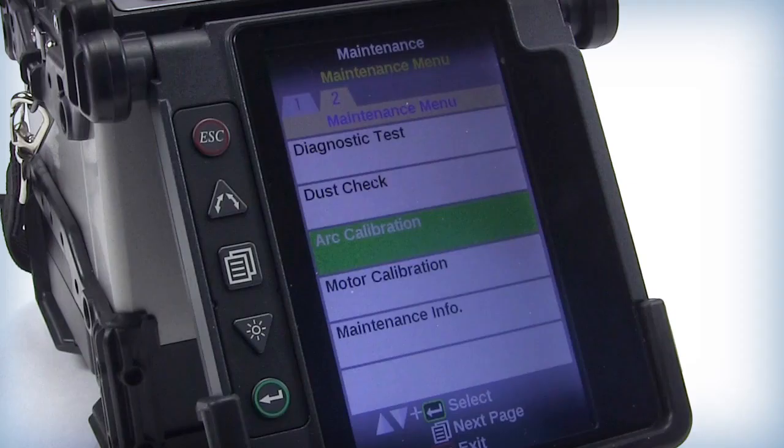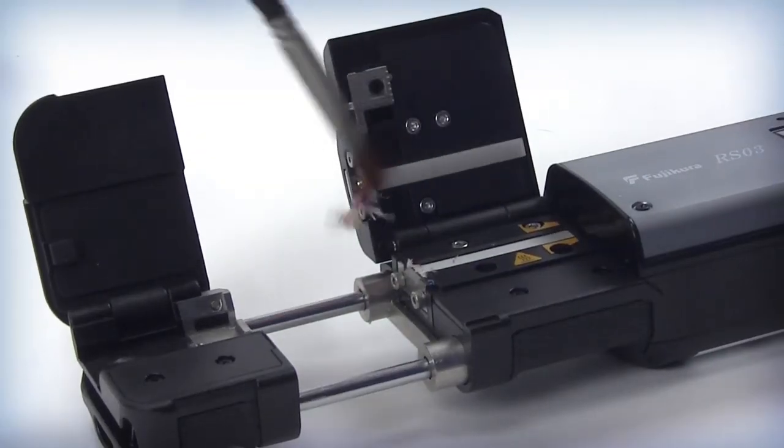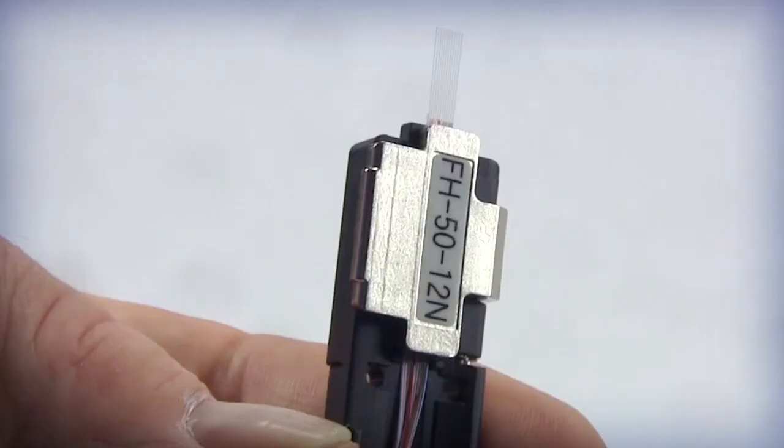Fusion splicers should be properly arc calibrated. Accurate counts of cleaves should be noted before rotating or replacing blades. Thermal strippers should be cleaned and properly adjusted. SWR should not be over-handled at the point you wish to splice.